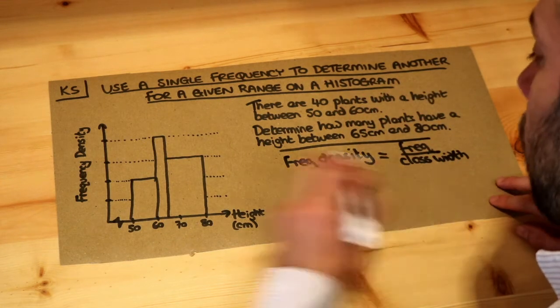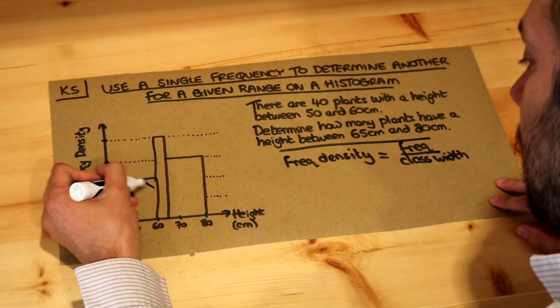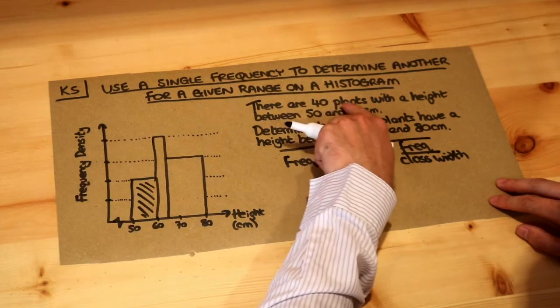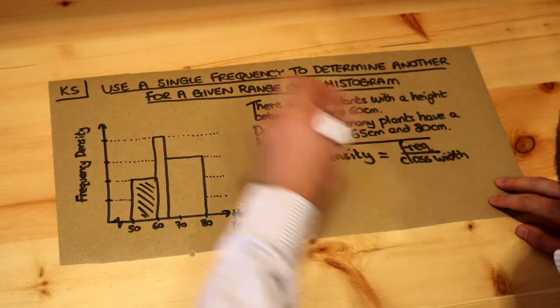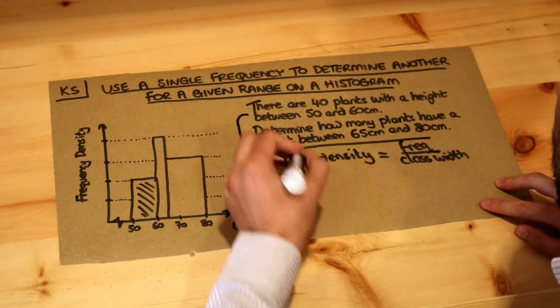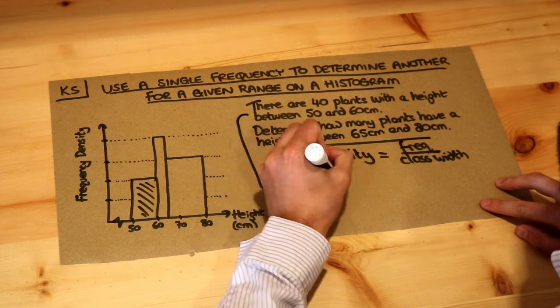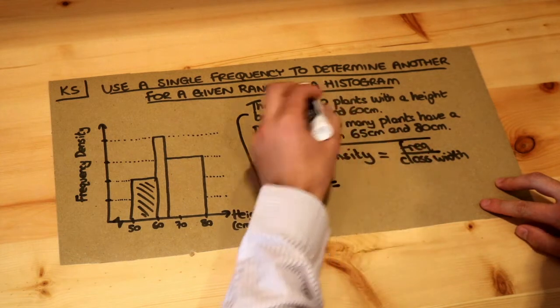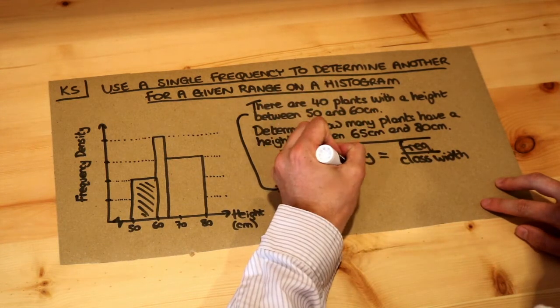Now we're told for this bar, the 50 to 60 centimeters bar, we're told what the frequency is—there's 40 plants. So for this information here, the frequency density, FD for short, is the frequency which is 40 plants divided by the class width.